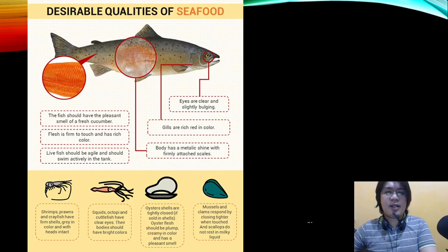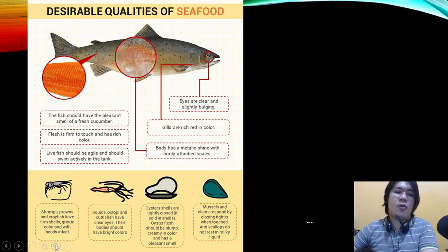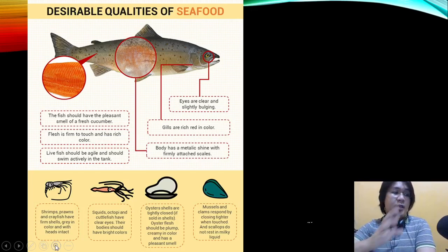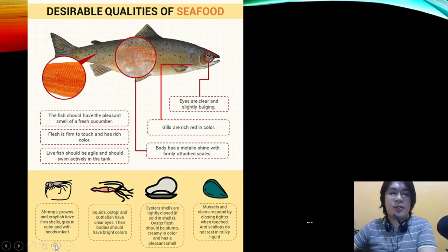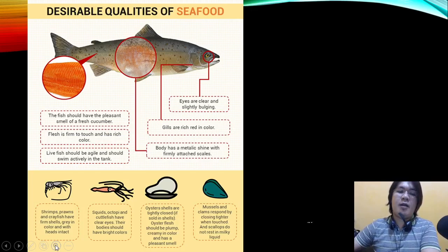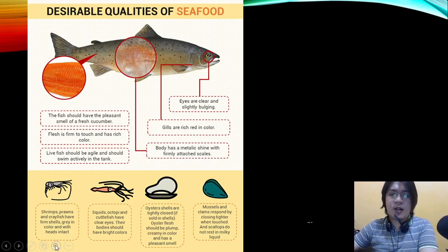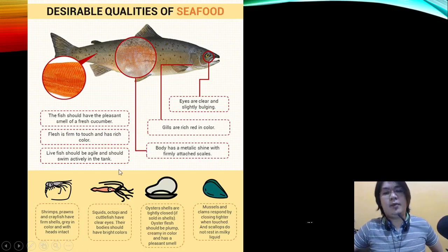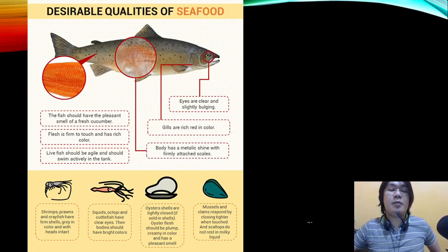The body of the fish should have a metallic shine with firmly attached scales. For shrimp, prawns, and crayfish: shells should be firm and gray in color, and the head must be intact. For squid, octopus, and cuttlefish: eyes should be clear and the body should have bright colors. For oysters: shells should be tightly closed, or if sold shucked, the flesh should be plump, creamy in color, and have a pleasant smell. Mussels and clams should respond by closing tighter when touched, and scallops should not rest in milky liquid.